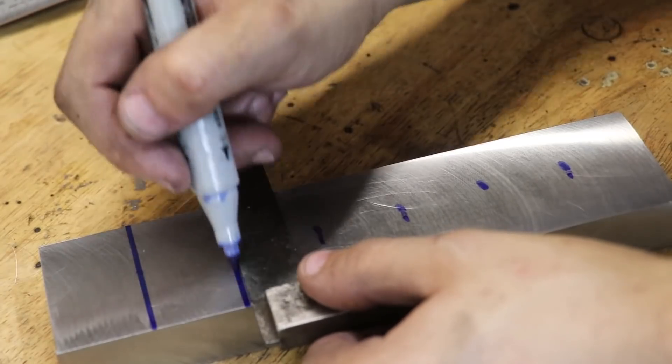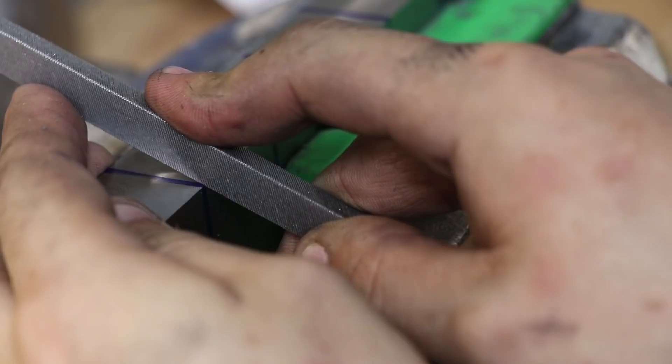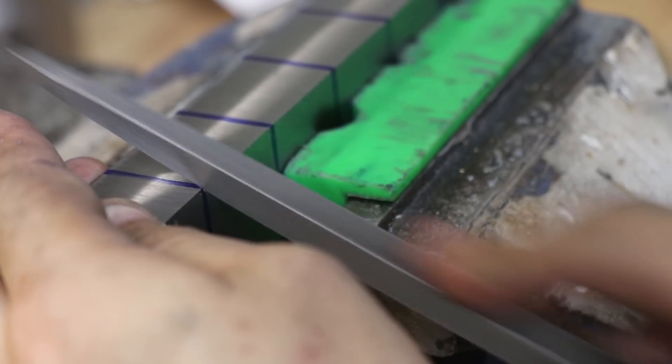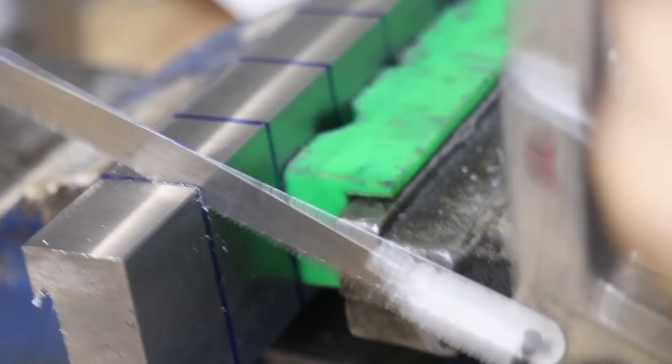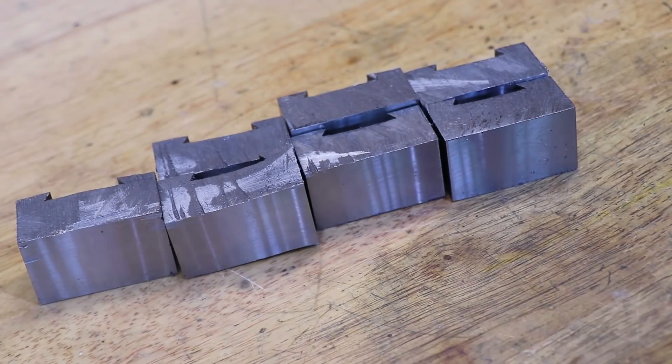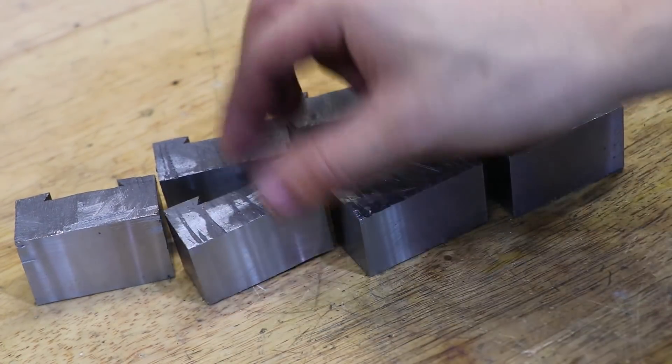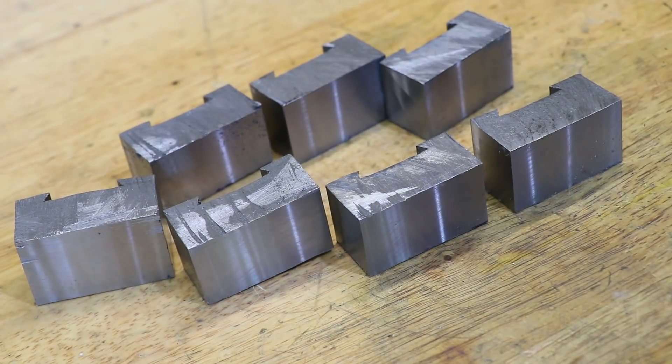Now that I've cut the dovetail I'll mark out the individual tool holders and I'll cut them off. Now from this one piece of stock I was able to get seven tool holders which should be enough to last me for a long time.